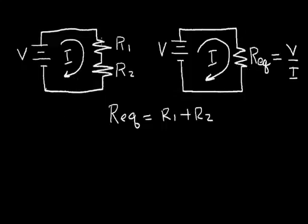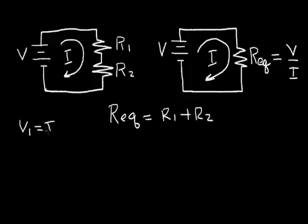Now on the circuit on the left side, the key concept here is that the same current flows through R1 and R2. So I can calculate the voltage across R1: V1 is equal to the current times the resistor R1, by Ohm's Law.